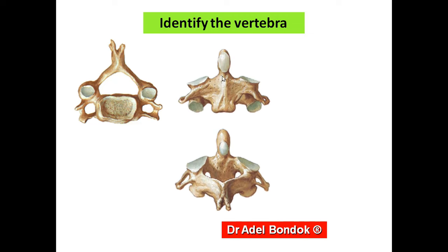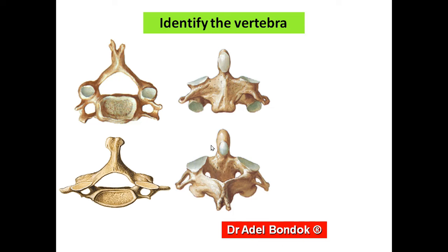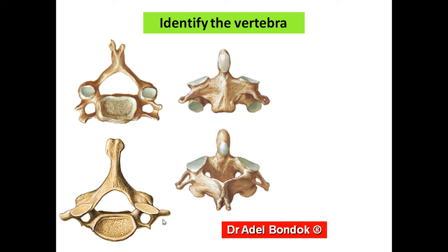This is the second cervical vertebra — the axis — identified by the odontoid process or dens. This is the seventh cervical vertebra, identified by its long spine which is not bifid. And this is the first cervical vertebra — the atlas — which has no body, only an anterior arch and a posterior arch.